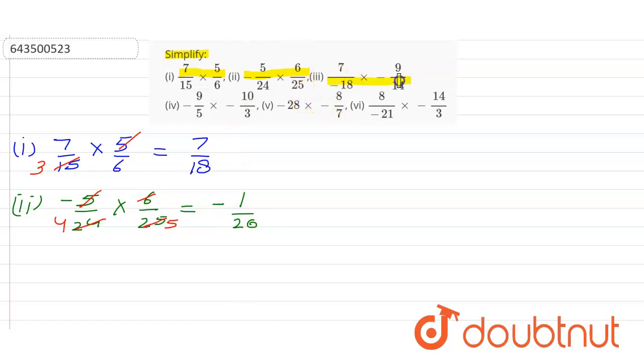Now it's time to consider the third one. For the third one, they gave us 7 by minus 18 multiply with minus 9 by 14. Here both values are negative.